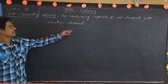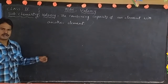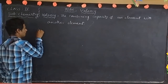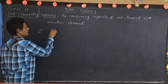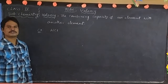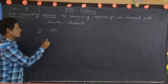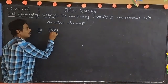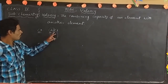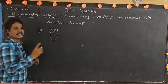The combining capacity of an element with another element is called valency. For example, hydrochloric acid. Here we can find out the hydrogen valency. How many chlorines attach to a hydrogen atom? One chlorine attaches to one hydrogen atom. That is why hydrogen valency is one.